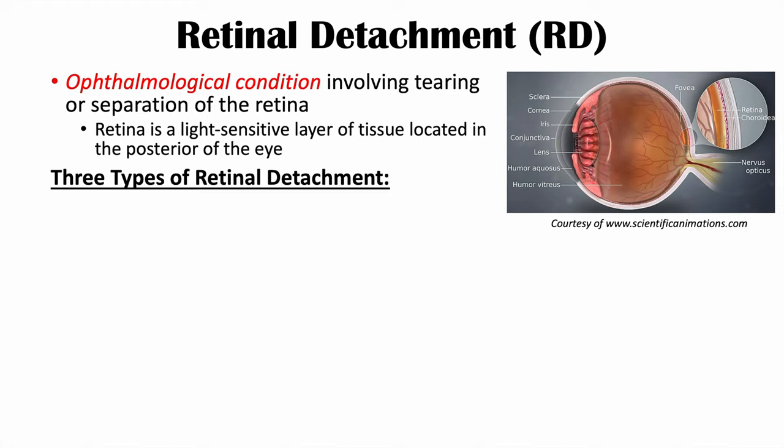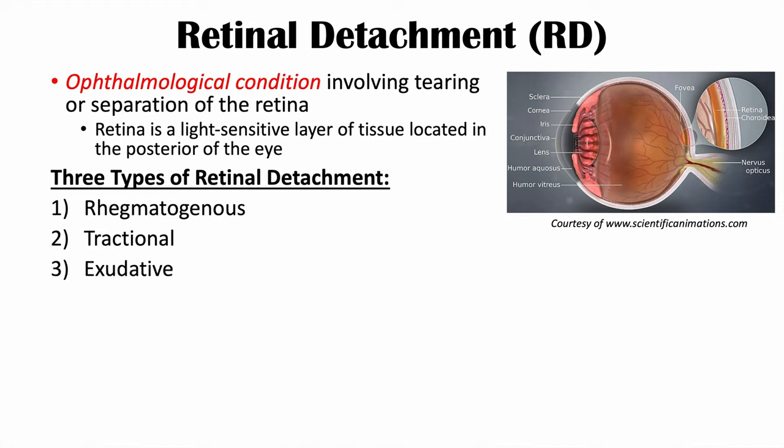There are actually three types of retinal detachment. One type is known as regmatogenous, another type is known as tractional, and another type is known as exudative. We're going to talk about these in more detail in the upcoming slides.